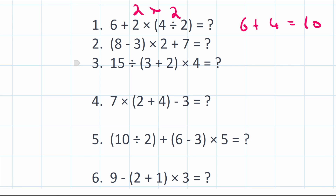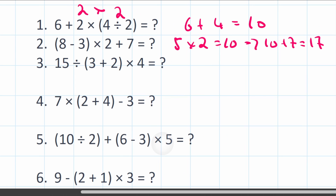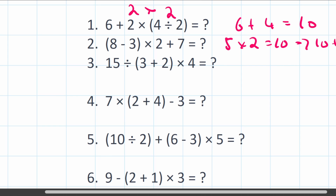Question 2: (8 minus 3) multiplied by 2 plus 7. Brackets first: 8 minus 3 equals 5. Then multiplication: 5 times 2 equals 10. Then addition: 10 plus 7 equals 17.